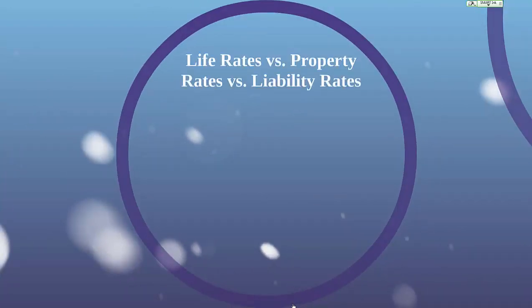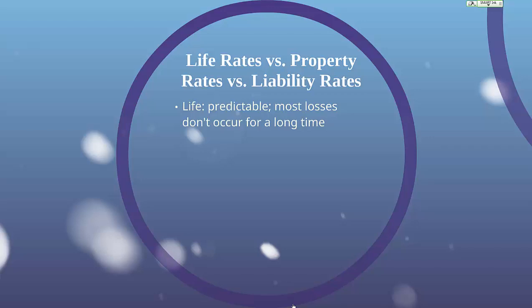Let's talk about life rates versus property rates versus liability rates. Life insurance is based on a predictable type of loss, and most losses don't occur for a long time. The expectation of mortality rates or death rates of people born in the same year and of the same sex, non-smokers versus smokers, is very predictable. So insurance companies can be fairly accurate in their rates as long as they have a large number of insureds. Life insurance policies are typically in force for a long time — even term policies might be in force for 20 or 30 years, and whole life policies even longer.